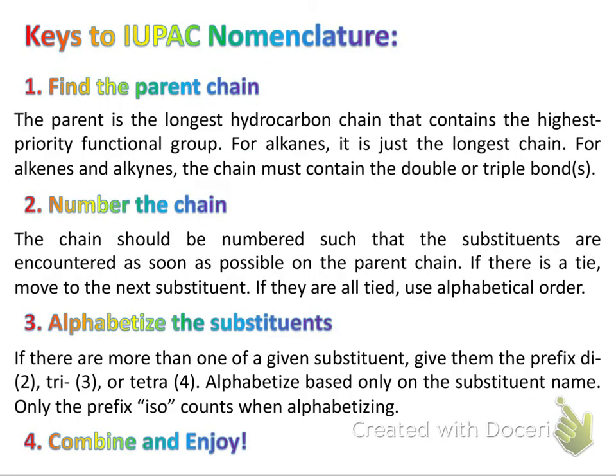First, a little summary of the rules of IUPAC nomenclature when naming these hydrocarbons. First, we're going to find the parent chain. The parent chain is going to be the longest hydrocarbon chain that contains the highest priority functional group. With alkanes, it's simply the longest chain possible. For alkenes and alkynes, we need to make sure the chain includes the double or triple bond, respectively.